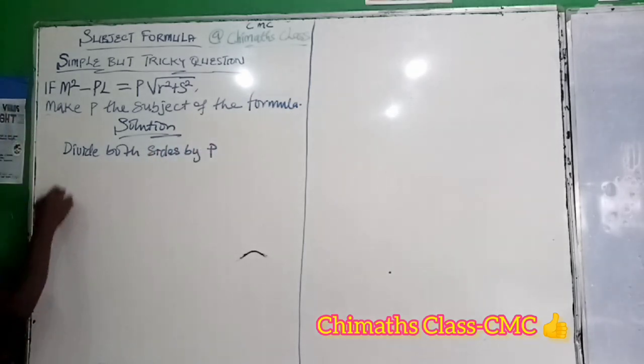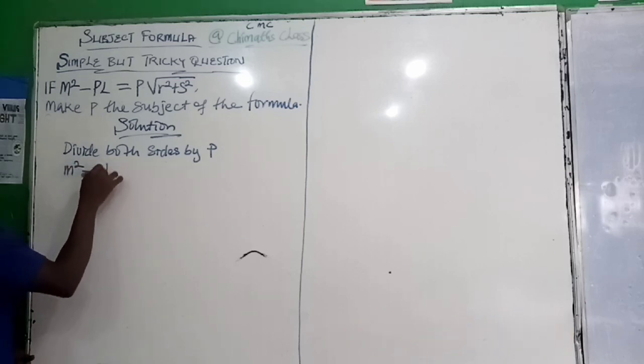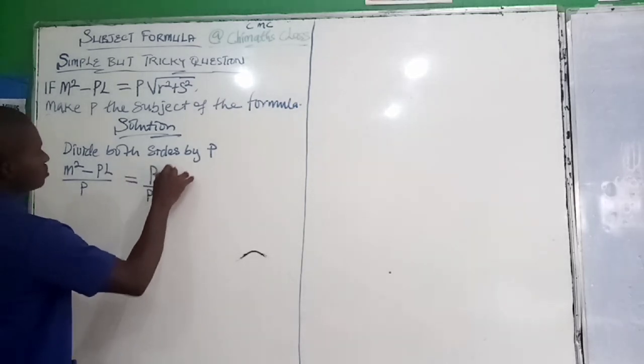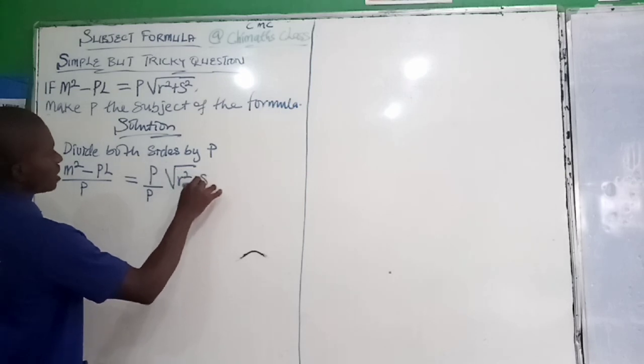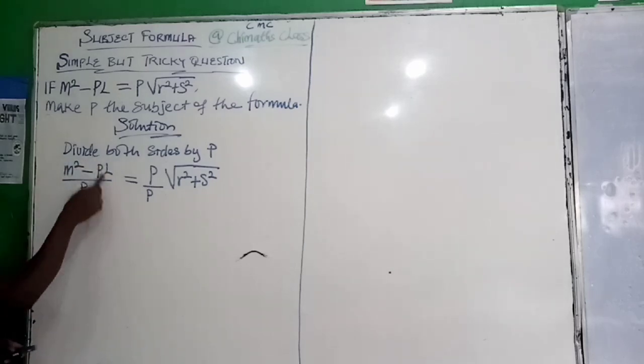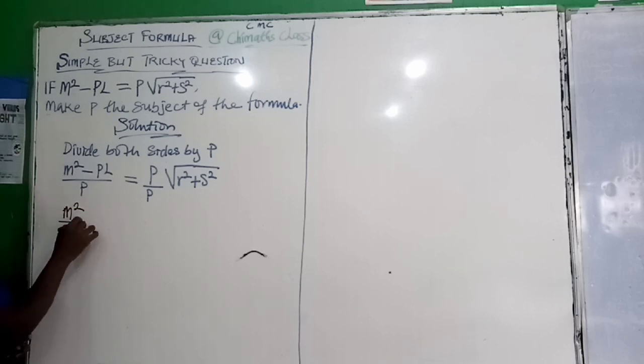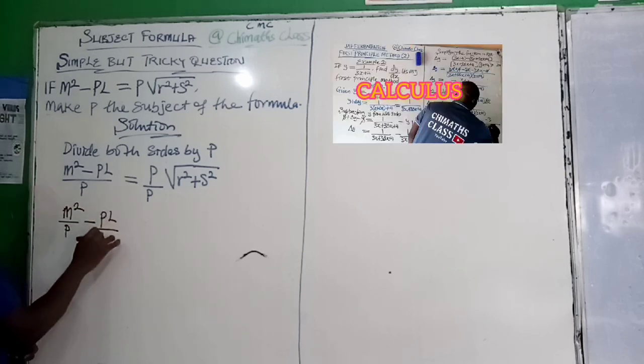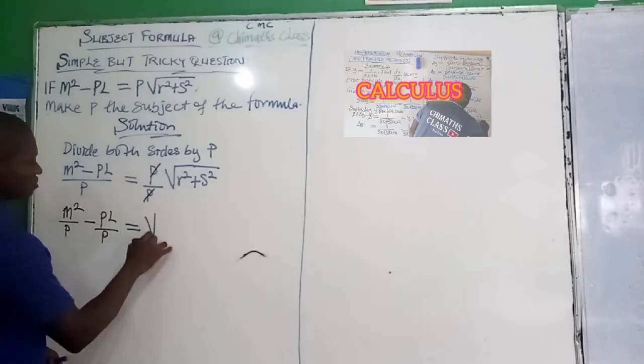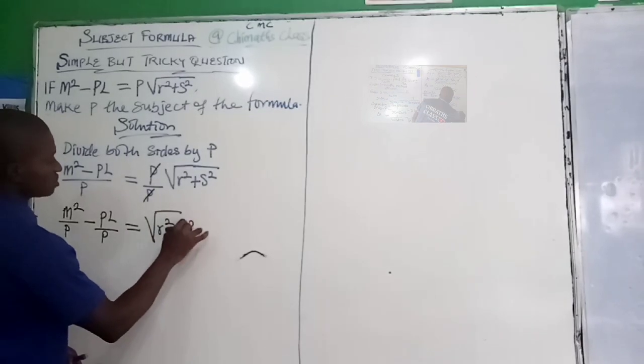So that we have M squared minus PL over P is equal to P over P on the root of R squared plus S squared. This fraction is the same thing as saying M squared over P minus PL over P is equal to, already this P have cancelled, so that we have only root of R squared plus S squared.